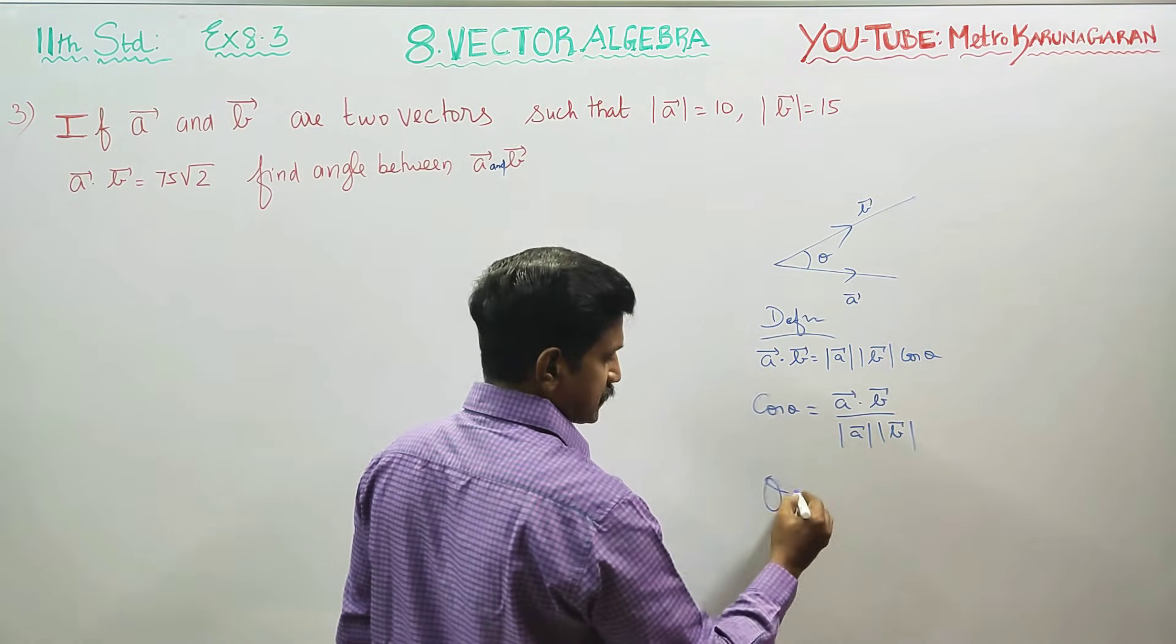Simplifying, we get cos inverse of 1 by √2. Since 1 by √2 equals cos 45 degrees.